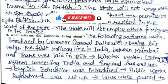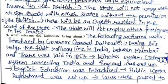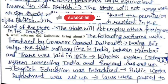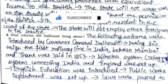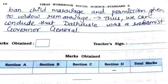Fourth: What reforms did Dalhousie bring about? The following reforms were introduced by Governor General Dalhousie: The first railway line in India between Mumbai and Thane was laid in 1853. A wireless telegraph system connecting India and England was set up. English education was introduced. The Public Works Department was set up. Laws were passed to ban child marriage and permission was given for widow remarriage. Thus we can conclude that Dalhousie was a reformist Governor General.